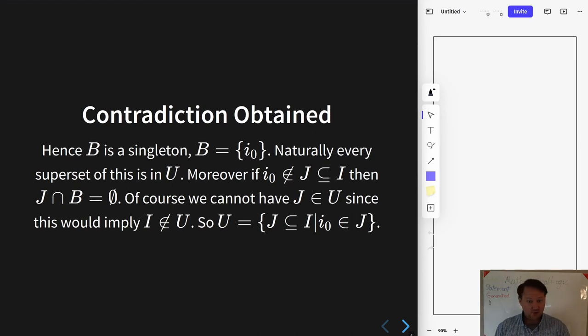So let's go ahead and try to prove it. Well, since B is in the ultrafilter, then every superset of it is also in the ultrafilter just by closure under supersets. But then that just means that this collection of all of the sets containing the element i₀, those are all in the ultrafilter. So that part of it is really quite easy.